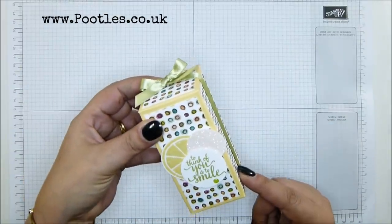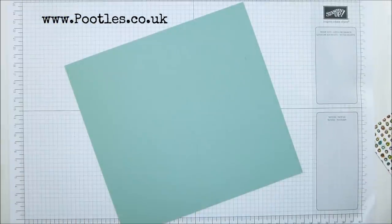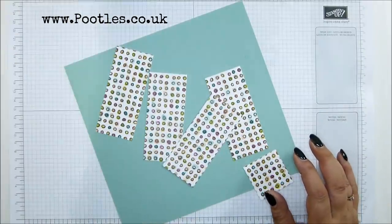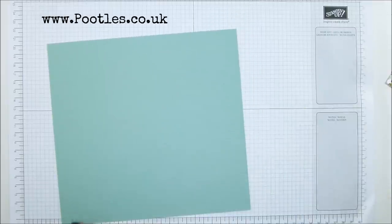This was a So Saffron version. I'm going to do a Mint Macaron version because I wanted to use the same paper which is from the Share What You Love Suite, exactly the same paper. I wanted to see what it was like against that. Pretty awesome I reckon.